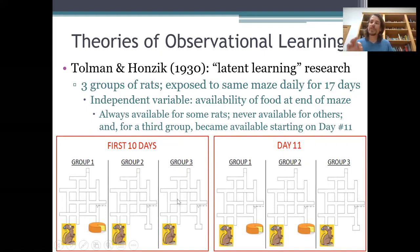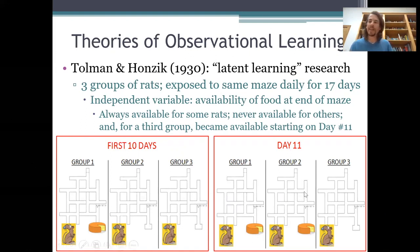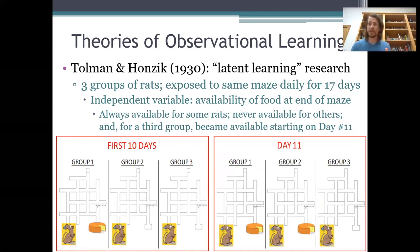For the rats in the third group, food was never available — they never got reinforced. But the interesting group is the middle group, group two. For them, food was absent from the maze for the first 10 days of the experiment, then starting on the 11th day it was added. The dependent variable was errors — the number of wrong turns the rats made as they navigated the maze.